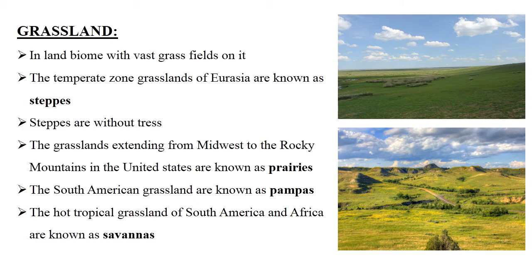Grassland is the area in which the vegetation is dominated by a nearly continuous cover of grasses. In the grassland region, the climate is ideal for the growth of grasses only. It is an inland biome with vast grass fields on it.